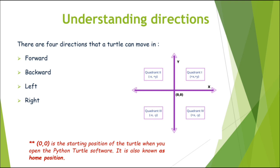There are four directions in which the turtle can move: forward — the direction where the turtle is facing — it can move forward from that position, it can move backward from the position, it can turn to the left, or it can turn to the right. Let us try to understand this concept with the help of a figure.